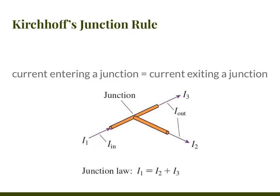The first law is Kirchhoff's junction rule, which is basically just the conservation of current. It says that the current that enters a junction — a junction is where two wires meet — equals the current exiting a junction. We write that as I-in equals I-out.